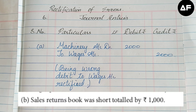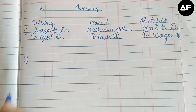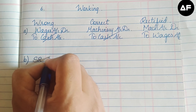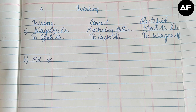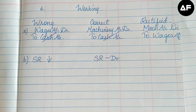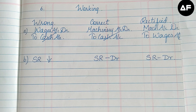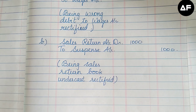The second transaction: sales return book was short-totaled by rupees 1000, meaning it is under-cast. The sales return book has a natural debit nature. Since it is under-cast, we need to debit it further in the rectification entry. The rectification entry is: Sales Return Account Dr. to Suspense Account for rupees 1000. Narration: sales return book under-cast.